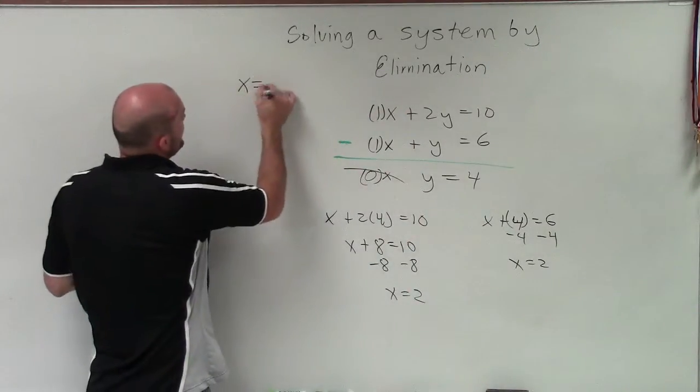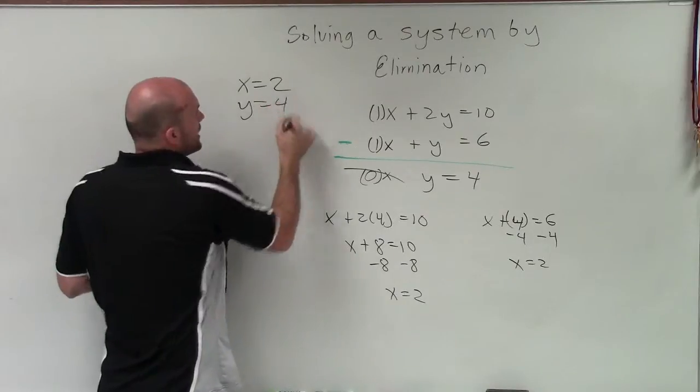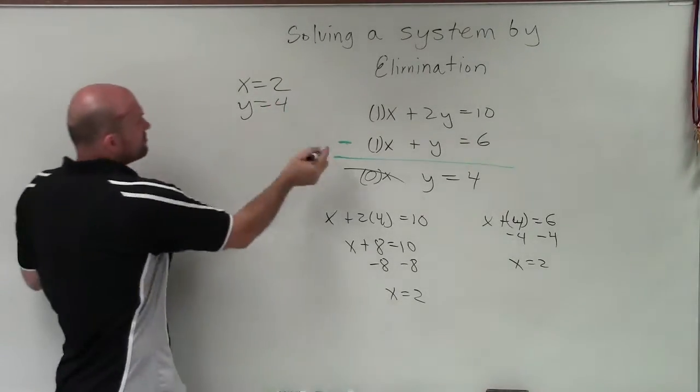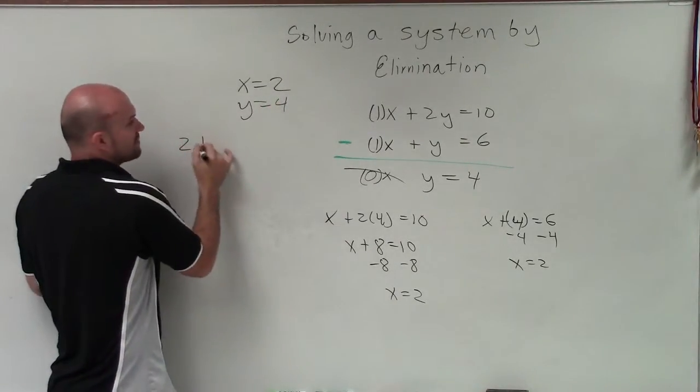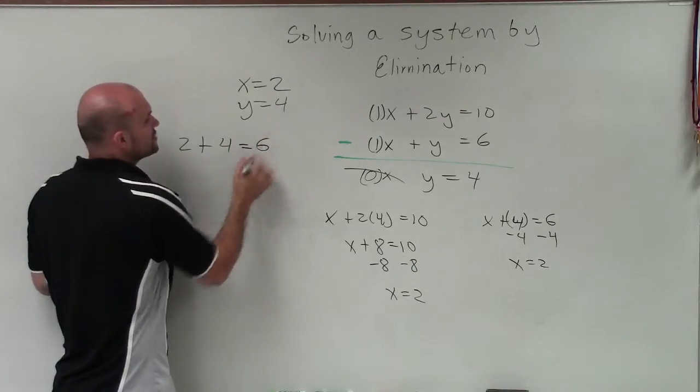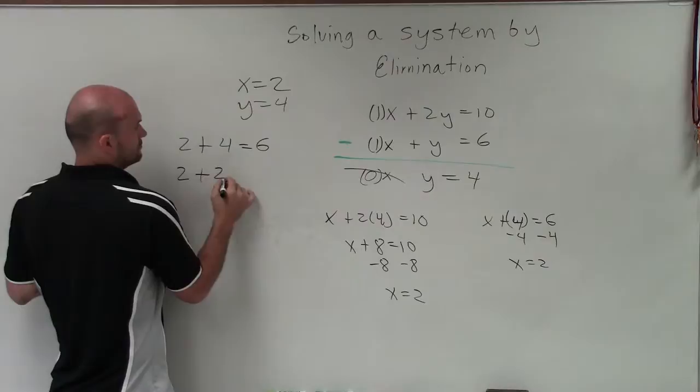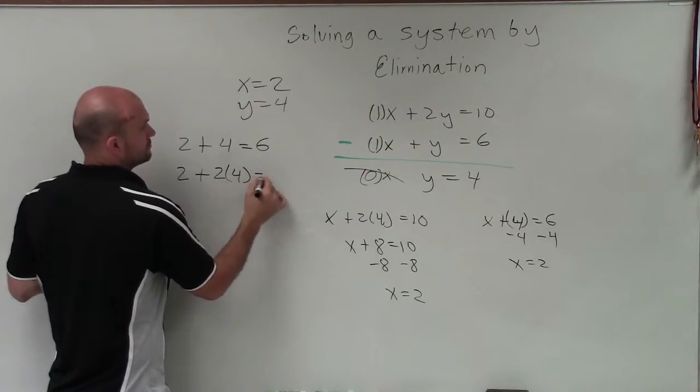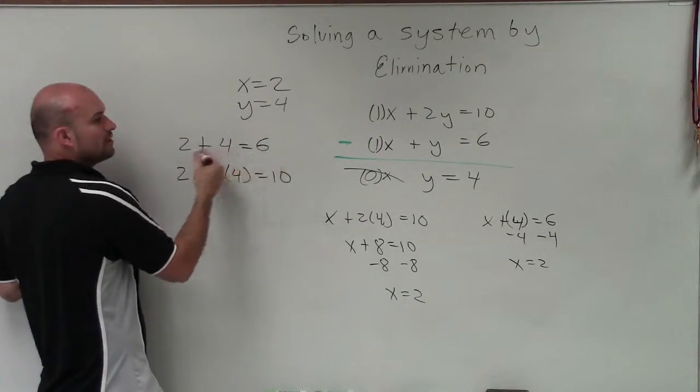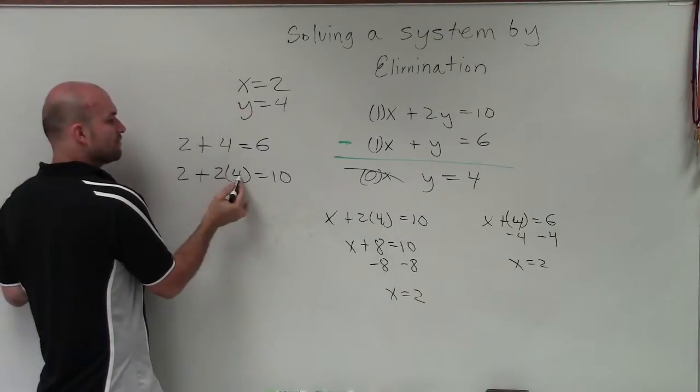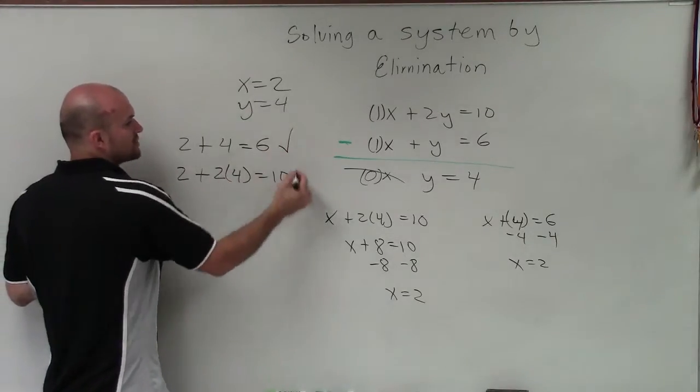Therefore, our solution is x equals 2 and y equals 4. And we can prove that by plugging in 2 for x and 4 for y, and making sure that is true for both equations. Well, 2 plus 4 is equal to 6. 2 times 4 is 8, plus 2 is 10. So it works for both equations.